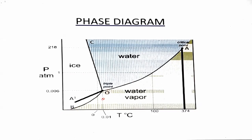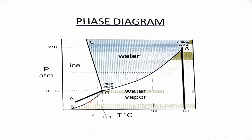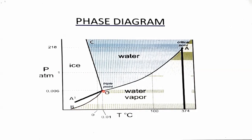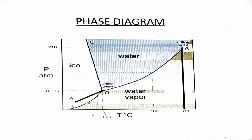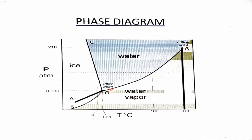The first curve to learn is the BO curve. At this curve, two phases of water are in equilibrium: ice and water vapor. Since ice and water vapor are in equilibrium — meaning solid is directly converting into the gaseous phase — this curve is called the sublimation curve.